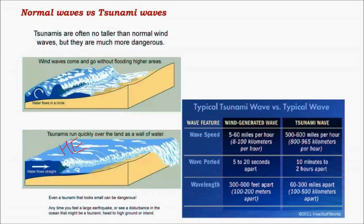Tsunami waves carry a huge amount of water with them. Their amplitude is much higher when they hit the coast compared to their amplitude in the deep oceans. In deep oceans they are less significant and may not even be observed, as most of the water movement takes place below the ocean surface. But when they hit the coast, their wavelength decreases and their amplitude increases significantly.